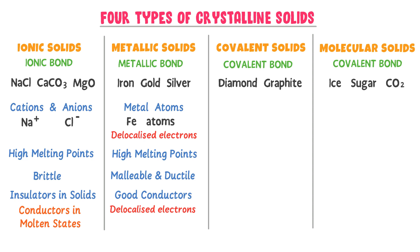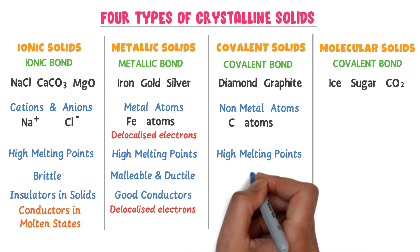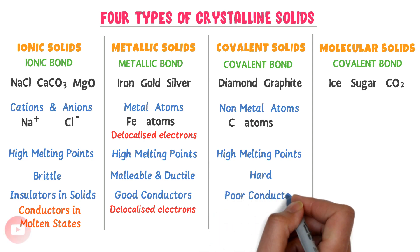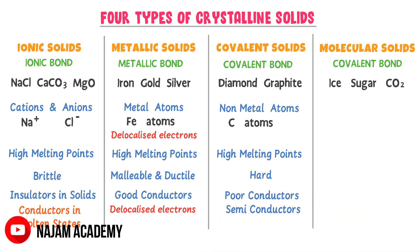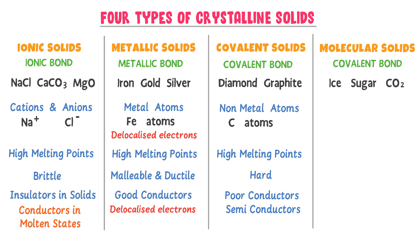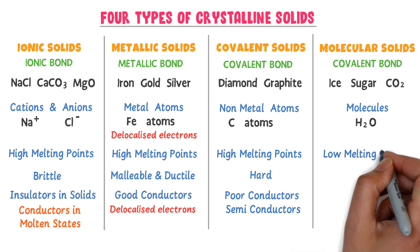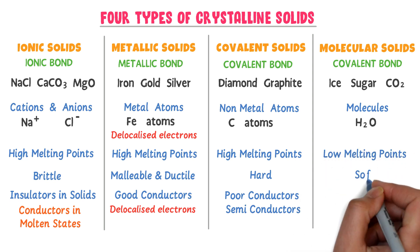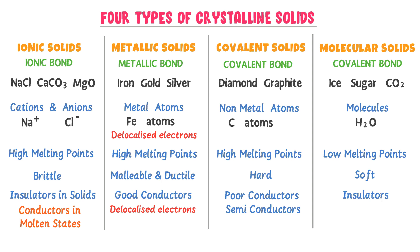Covalent solids like diamond are made up of non-metal atoms like carbon. They have high melting points, are hard in nature, and are poor conductors or semiconductors of electricity. Molecular solids like ice are made up of molecules like H2O. They have low melting points, are soft in nature, and are insulators or non-conductors. Note down all these important points about the four types of crystalline solids.